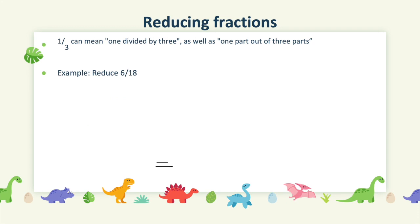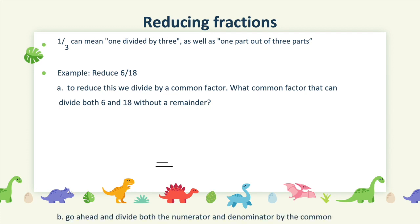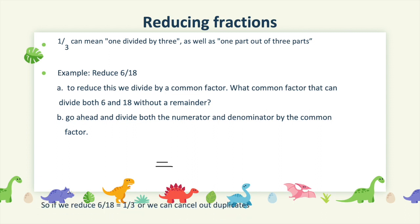Consider this: how do we reduce 6 over 18? To reduce this, we divide by a common factor. What common factor can divide both 6 and 18 without a remainder? In this case, both numbers are even, hence they are both divisible by 2. And if you know your multiplication table by heart, you can also tell that 3 and 6 can divide 6 and 18 without a remainder. Go ahead and divide both the numerator and denominator by the common factor. You should keep dividing until it is no longer divisible by any number except 1. Your answer then becomes 1 third.